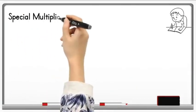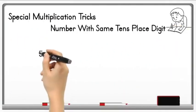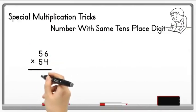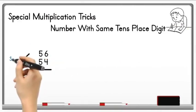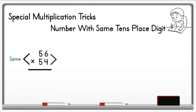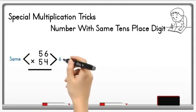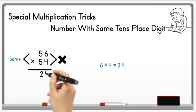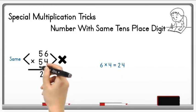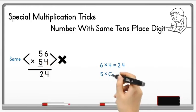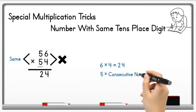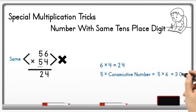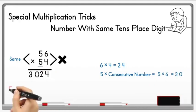Let's solve the second example: 56 multiplied by 54. The tens digit of both numbers is the same — 5 — and the sum of the unit digits is 10, since 6 plus 4 equals 10. Multiply the unit digits: 6 × 4 = 24; write 24 in the answer. Then multiply the tens digit 5 by its consecutive number 6: 5 × 6 = 30. Write 30 before 24, giving the final answer 3024.